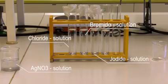For the detection of chloride, iodide, and bromide, we need silver nitrate, ammonia, sodium chloride, sodium iodide, and sodium bromide.